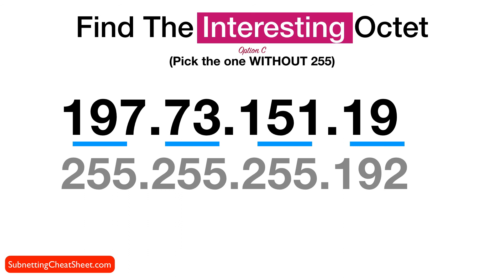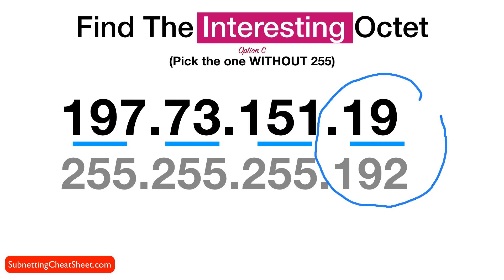Another way is if you're given the subnet mask instead of the CIDR — you simply pick the octet that doesn't have 255. So that would be the one ending in 192. That's pretty easy.